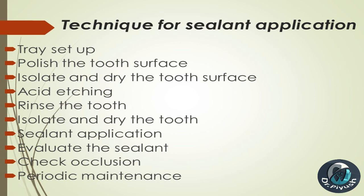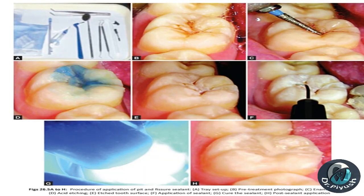Technique for sealant application: tray setup; polish the tooth surface; isolate and dry the tooth surface; acid etching; rinse the tooth; re-isolate and dry the tooth; sealant application; evaluate the sealant; check occlusion; periodic maintenance.